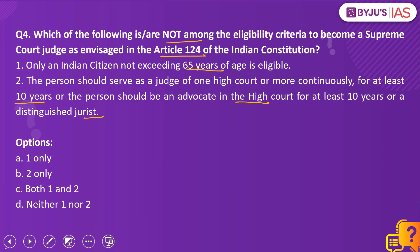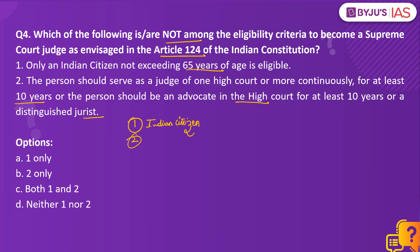Article 124 of the Indian Constitution lays down the eligibility criteria to become a Supreme Court judge. First, the individual must be an Indian citizen. Second, he or she should not be over 65 years of age — so statement one is correct. The other eligibility criterion is that the person should serve as a judge of one or more High Courts continuously for at least five years, or be an advocate in the High Court for at least 10 years, or be a distinguished jurist. Statement two says 10 years as a High Court judge, which is incorrect — it should be five years. Therefore, statement two becomes incorrect and the right answer is option B.